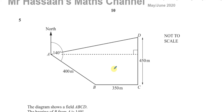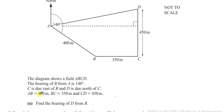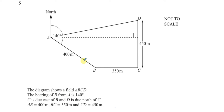This question tells us about a field. The diagram represents a field which is not to scale, with points A, B, C, and D. We're told that the bearing of B from A is 140 degrees, C is due east of B, and D is due north of C. The length from A to B is 400 meters, B to C is 350 meters, and C to D is 450 meters.